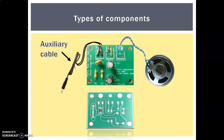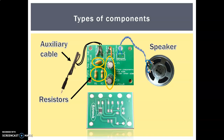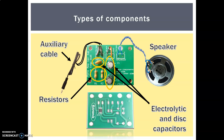We also have the auxiliary cable or 3.5mm jack and the speaker. Here we have some of the key components: these are resistors — the little peanut-shaped ones with colored bands to tell you what resistance they are. We have electrolytic and disc capacitors, and this little one down here, which often gets overlooked, is what we call a microchip — but we're going to talk about that one in more detail in a minute.